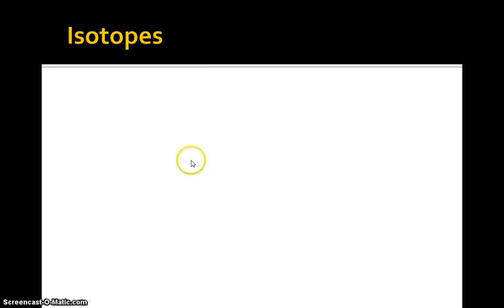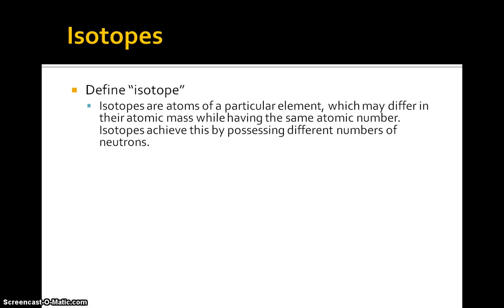Now we're going to talk about isotopes and review that. Let's define what an isotope is. Isotopes are atoms of a particular element which may differ in their atomic mass while having the same atomic number. Isotopes achieve this by possessing different numbers of neutrons.